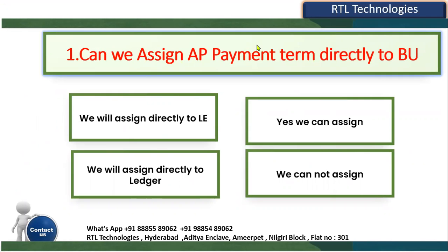We know that Account Payables is one of the important modules in Oracle Fusion Cloud Finance. Can we assign AP payment terms directly to a business unit? I have specified AP payment terms specifically because payment terms can be found in Account Receivables also. Payment term is basically used to prepare an invoice due date based on the definition — whatever we have defined, the system will go and prepare the invoice due date.